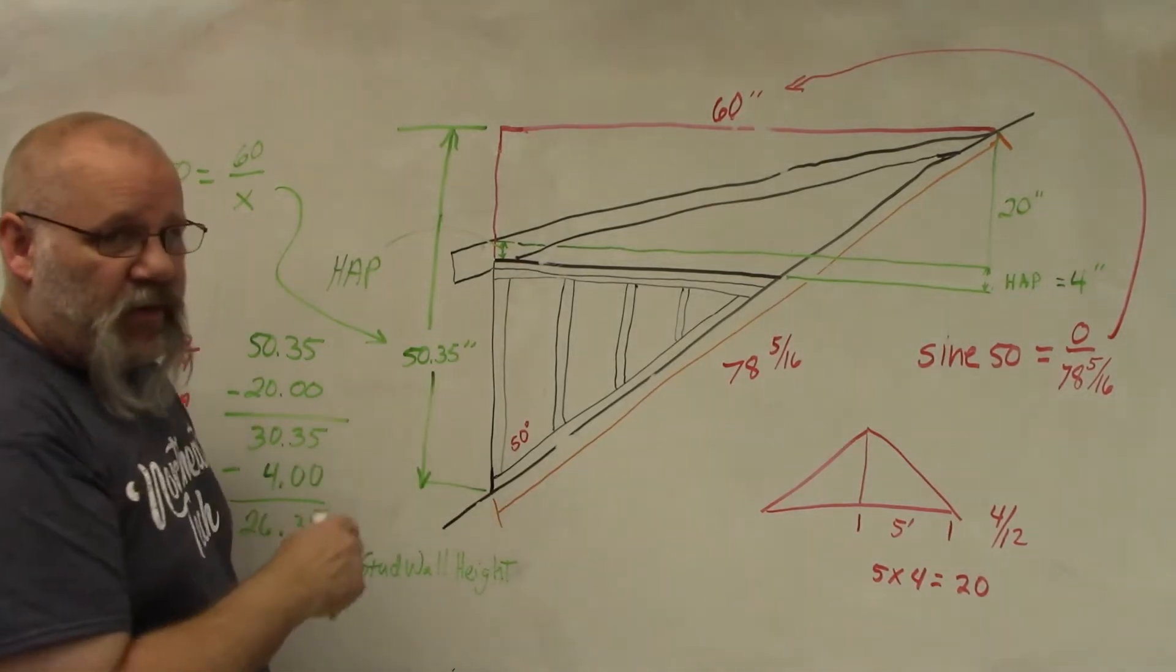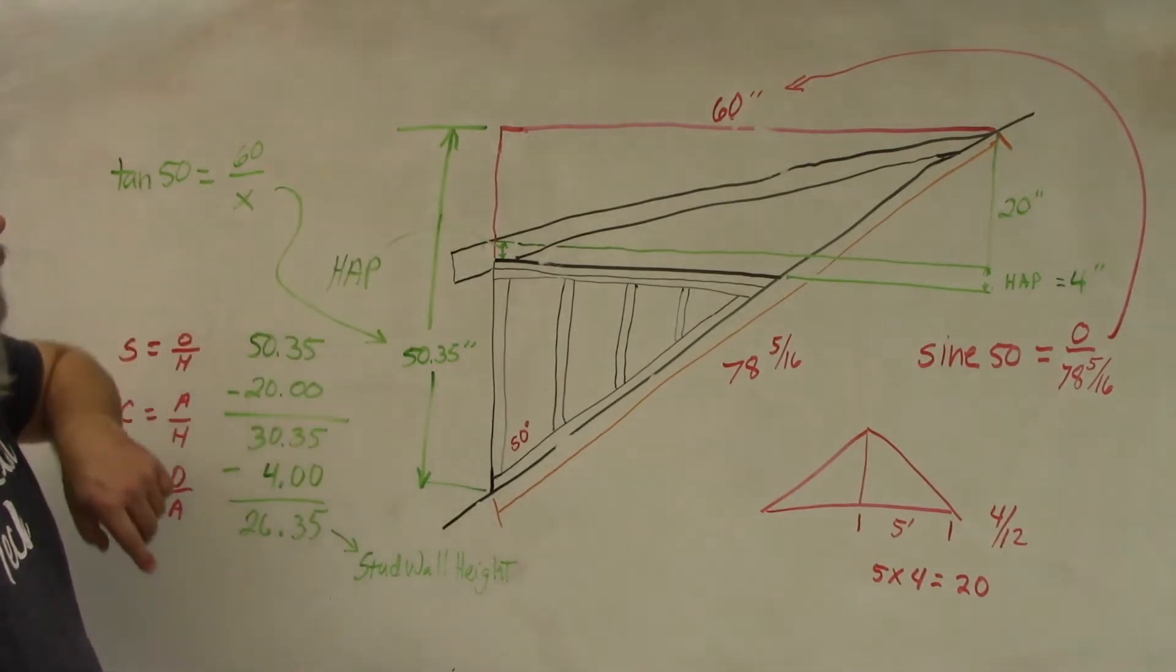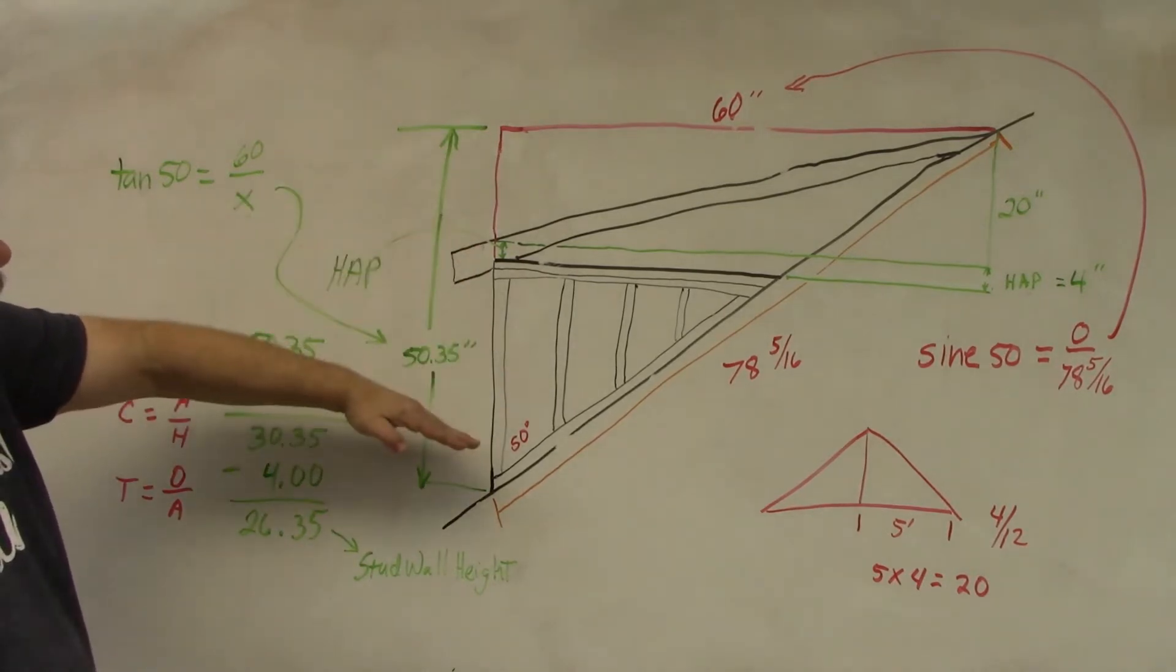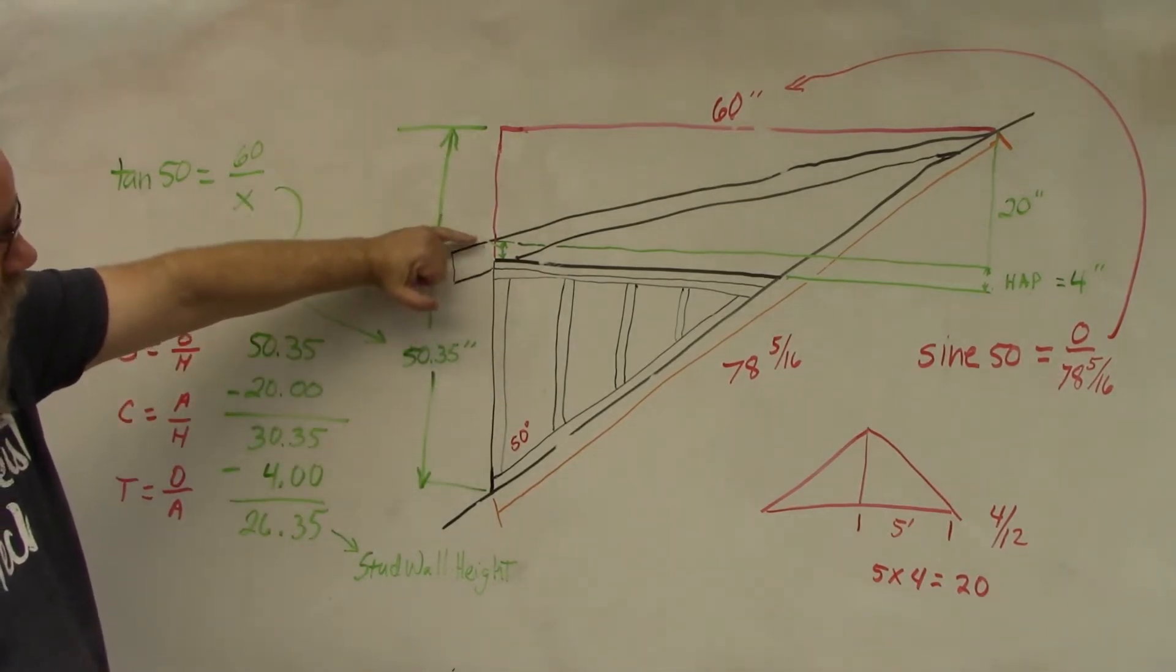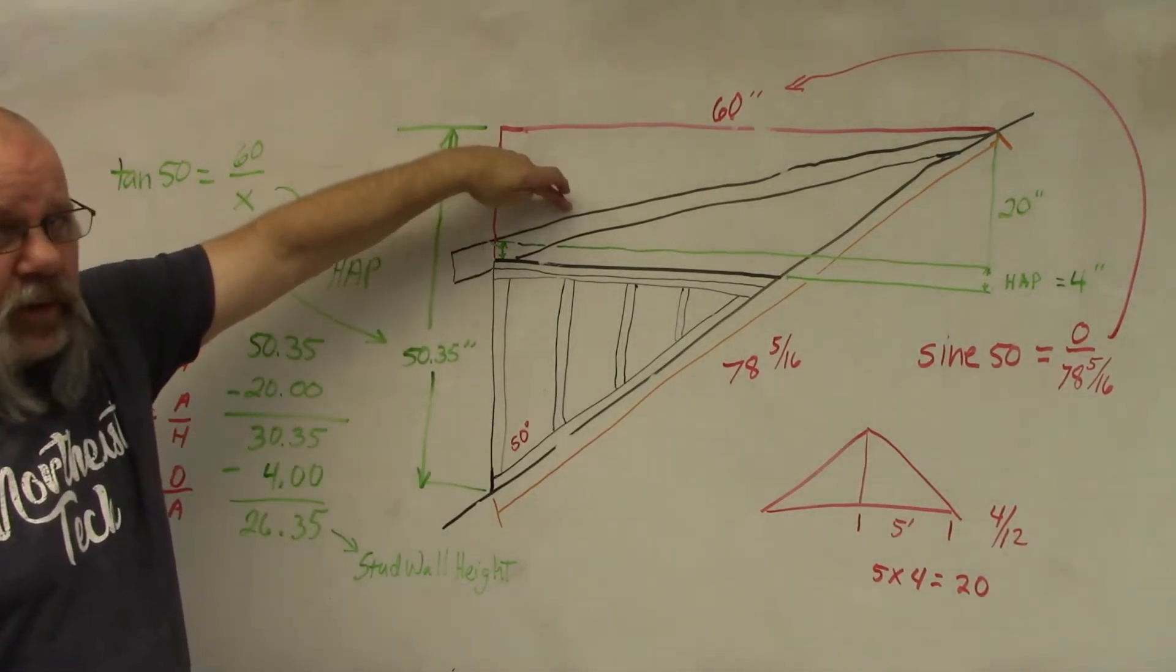Okay, so now we got the three sides of our triangle. Now we can figure out the front—we need to figure out what the height of our wall is, what HAP is, and what the height of our rafters. So the first thing we're going to do is figure out what the height of our rafters need to be.